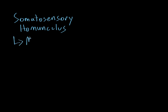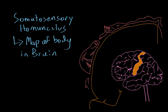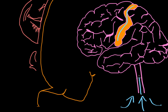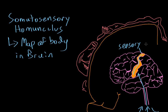The somatosensory homunculus is basically a map of your body in your brain. What I've drawn here is a picture of the brain. Let's focus on this pink area, which is known as the cortex. The region shaded in orange is a specialized part of your brain that receives sensory input from your entire body. Whenever you feel pain or heat anywhere in your body, that information is sent through the spinal cord into the brain, and it ends up in this one part of the cortex — known as the sensory strip.